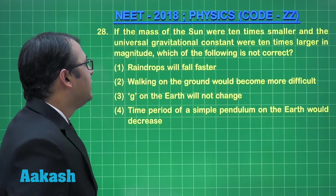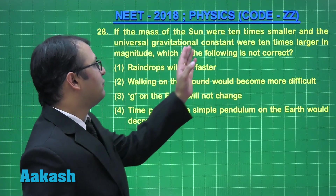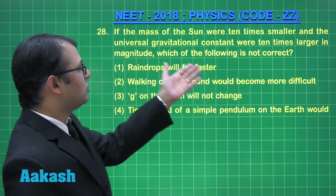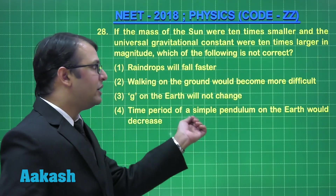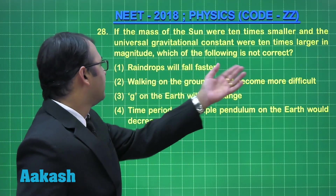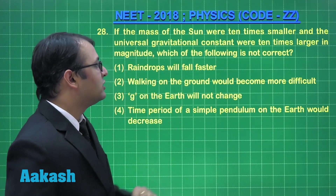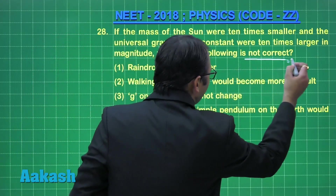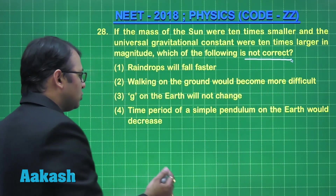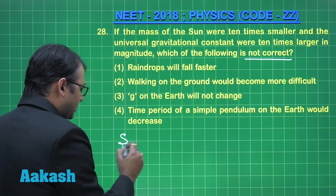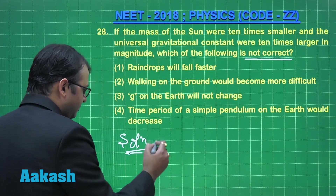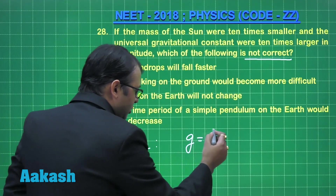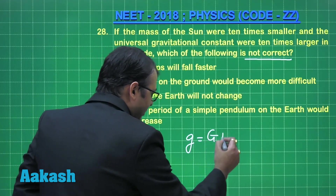Question number 28: if the mass of the Sun were 10 times smaller and the universal gravitational constant were 10 times larger — so G becomes 10G in magnitude — which of the following is NOT correct? It is very important to note the word 'not correct'.